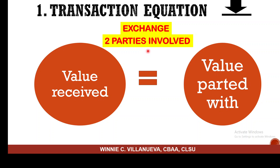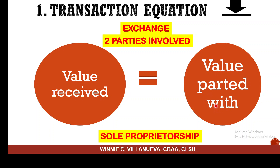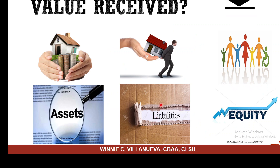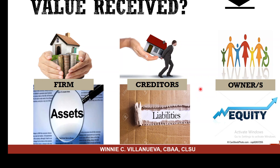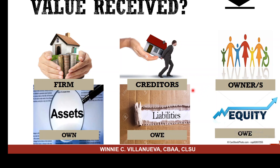You cannot have a relationship alone — you need someone for give and take. When someone gives you something, you receive it, and in exchange, you give them something — that is your value parted with. The party we are representing is the sole proprietorship. What are the values we can possibly receive? Asset belongs to the firm, liability to the creditor, and equity to the owner. It's what we own as assets, and what we owe because the creditor and owner each have a claim.